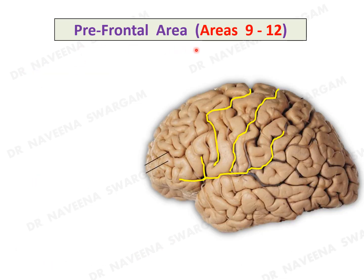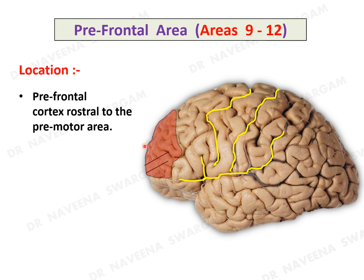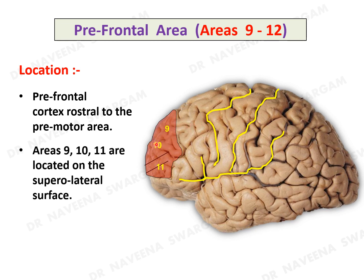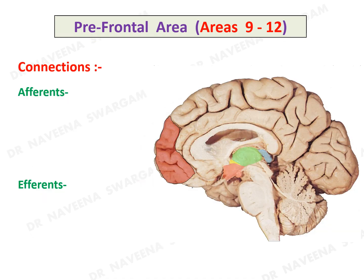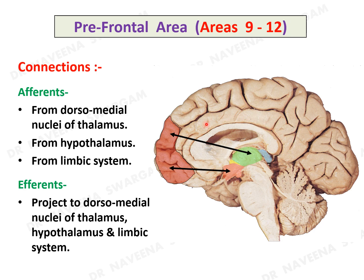Prefrontal area is divided into four areas, areas 9 to 12. It occupies the prefrontal cortex in front of the premotor area. Areas 9, 10, and 11 are located on the superolateral surface, whereas area 12 is predominant on the medial surface of the frontal lobe. Afferents come from almost all areas of the cerebral cortex and it is also connected to the dorsomedial nucleus of the thalamus, hypothalamic nuclei, and parts of the limbic system.